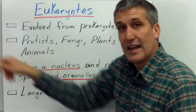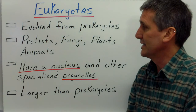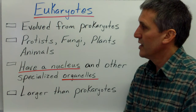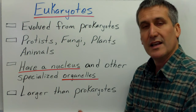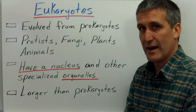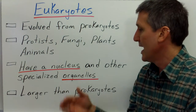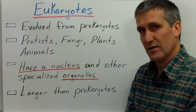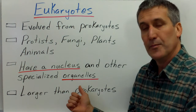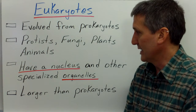Eukaryotic cells evolved from prokaryotic cells, and all of the other kingdoms of life are made of these more complex cells. The protists, the fungi, the plants, and the animals are all made of eukaryotic cells. They have a nucleus and other specialized organelles, and they tend to be larger cells as well.